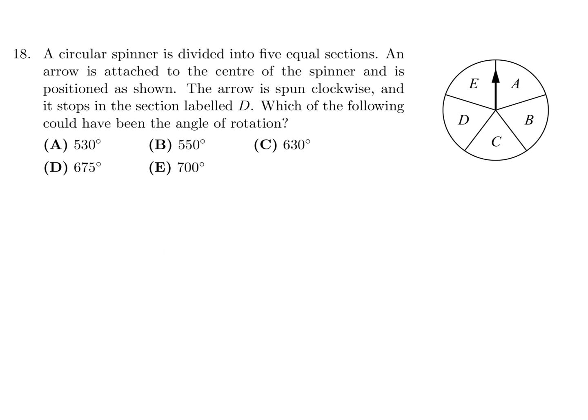A circular spinner is divided into five equal sections. An arrow is attached to the center of the spinner and is positioned as shown. The arrow is spun clockwise and it stops in the section labeled D, which of the following could have been the angle of rotation. Okay. All right. So let's think about this here. Equal. So that means each of these have equal positioning. So the whole way around is 360, right? Each of them is equal. So you have to divide by five and that'd be 72. So this is 72 degrees. This is another 72 degrees. So that'd be 144. This is another 72 degrees. So we're arriving at 216. And then this point is another 72 degrees, which is 288.